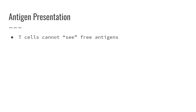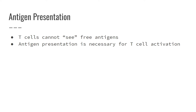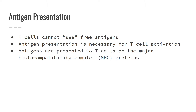Unlike B cells and antibodies, T cells can't see antigens. This means that we have to present the antigen to them on an antigen-presenting cell in order to activate the T cell. MHC — major histocompatibility complex — are the proteins that the antigens attach to for presentation.